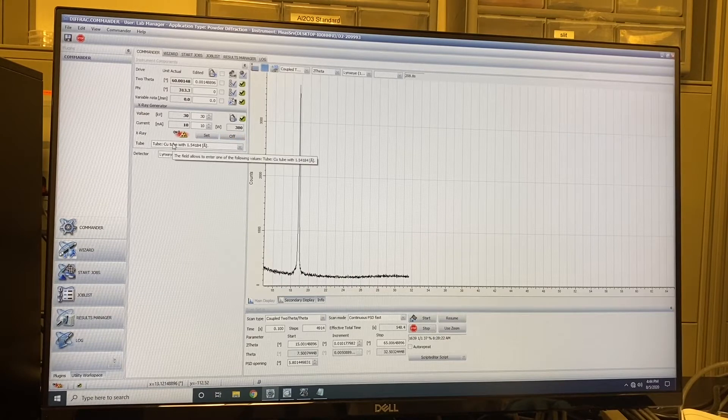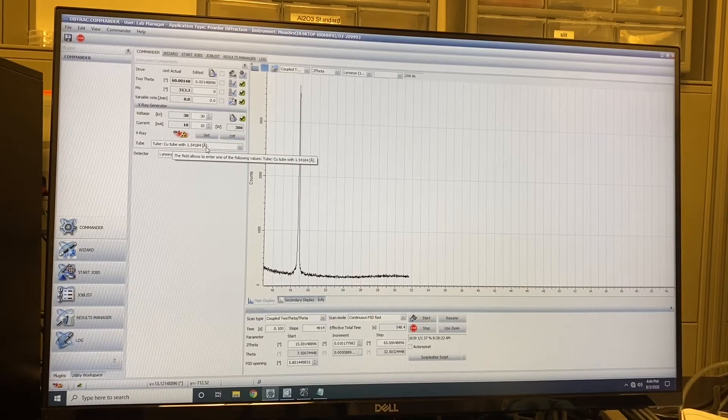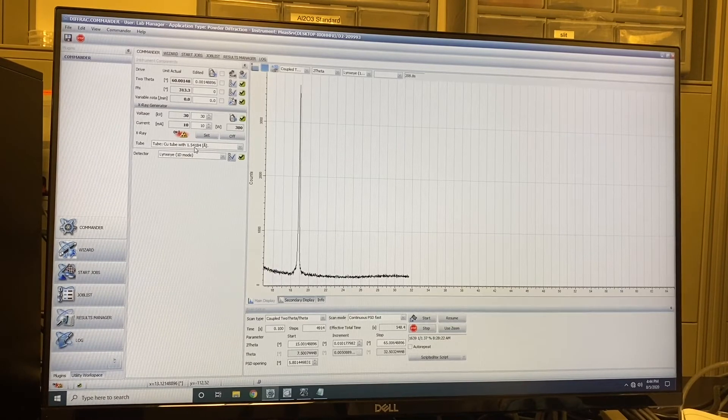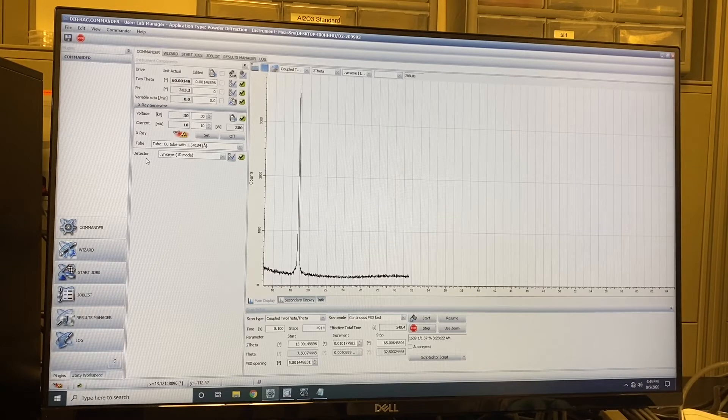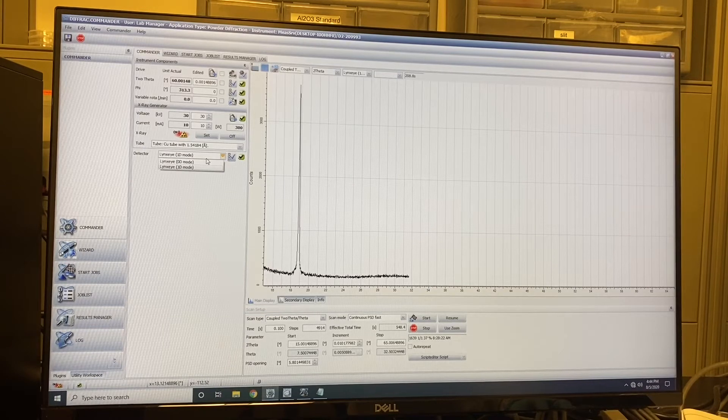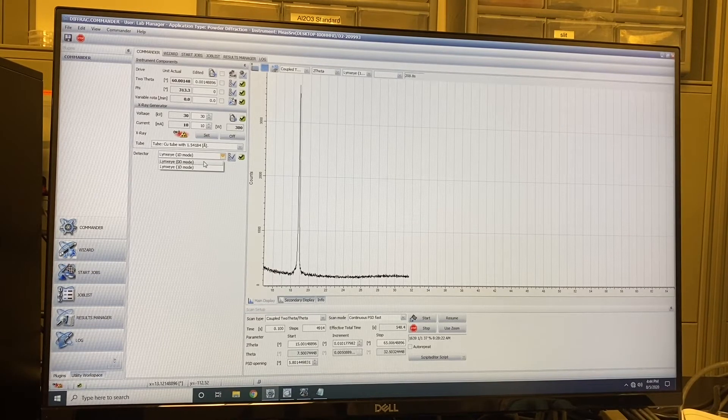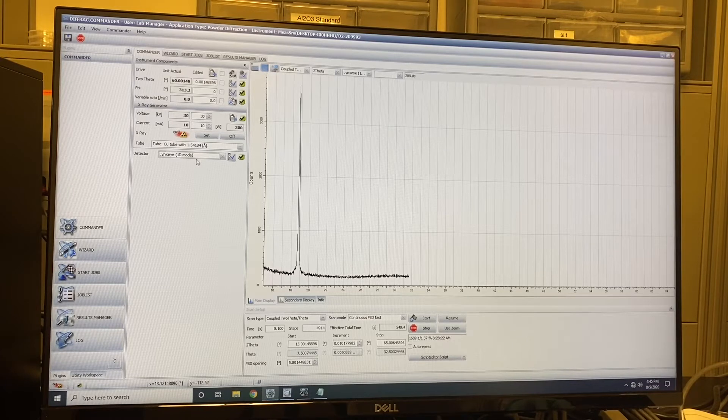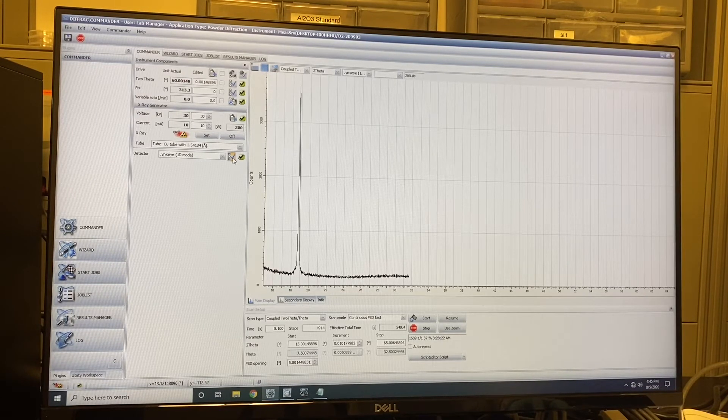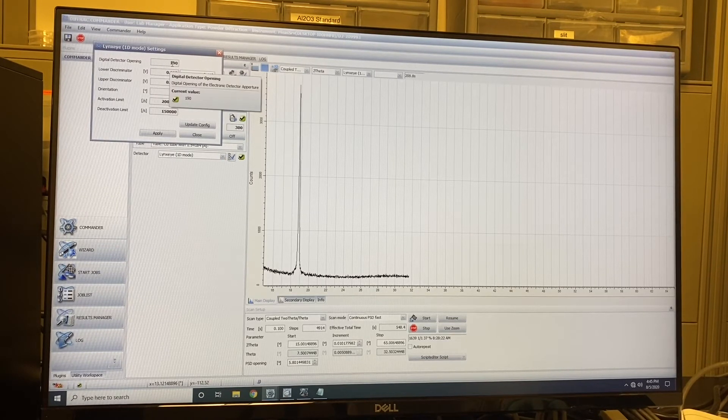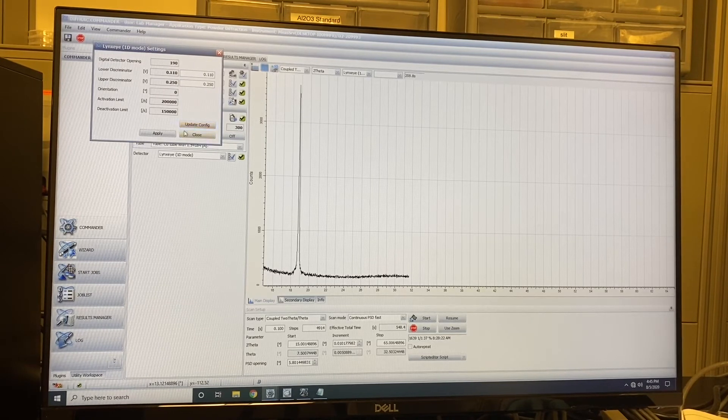For the X-ray source, we use copper. And here we can see the wavelength is 1.54 angstrom. It contains the Kα1 and the Kα2. We don't have the monochromator on this machine. And for the detector, we use LYNXEYE. And it has two models, 1D model and 0D model. Usually we will use 1D model here. So to make sure it is 1D before your measurement. And here you can check the opening angle of the detector. You can see it is 190. It's full opening.